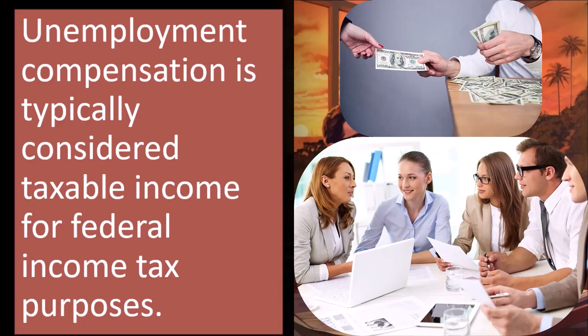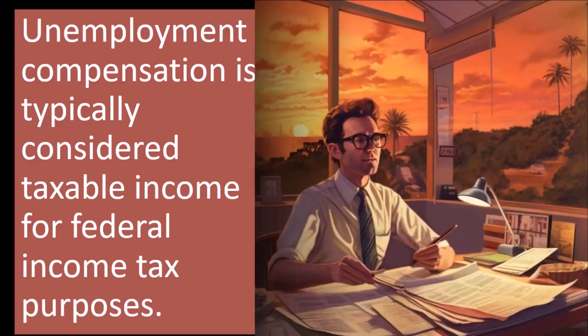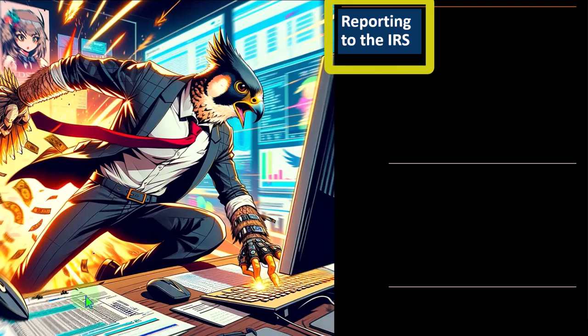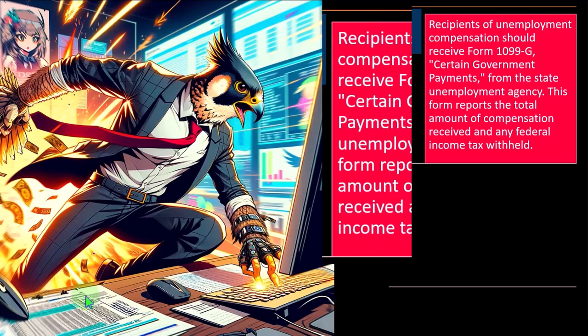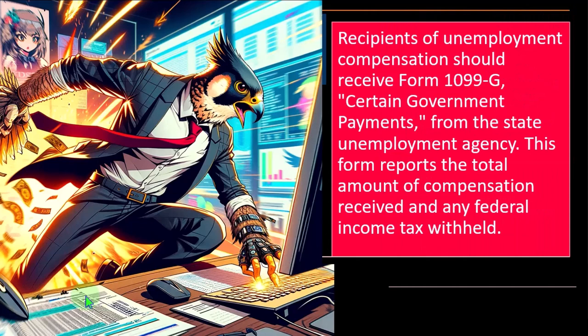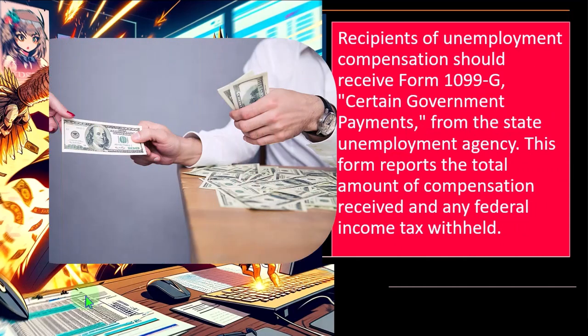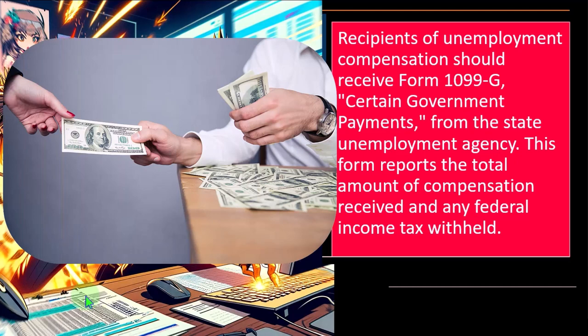You would generally include unemployment compensation as income. Unemployment compensation is typically considered taxable income for federal income tax purposes. Recipients should receive Form 1099-G — Certain Government Payments — from the State Unemployment Agency. This form is fairly straightforward from a data input standpoint, and like other 1099s, it typically goes to the IRS as well.